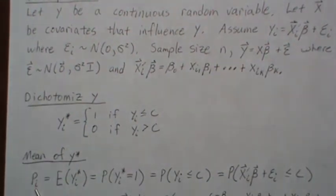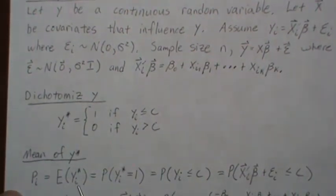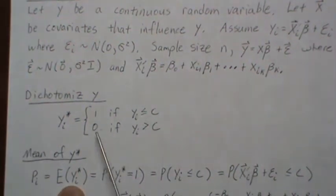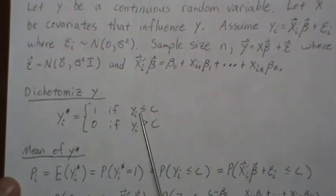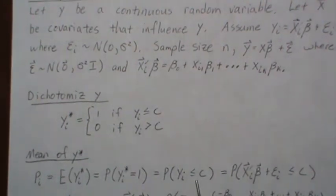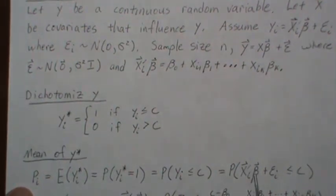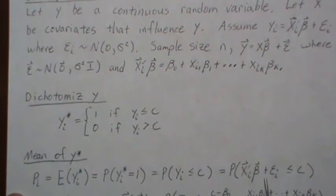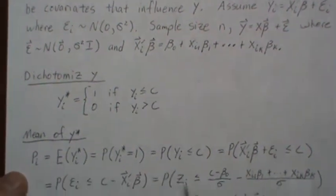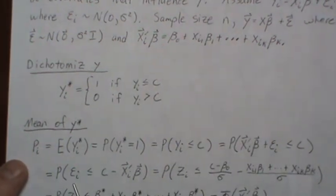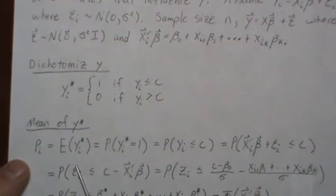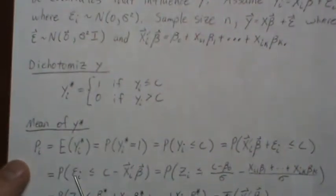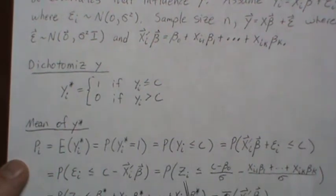Let's call it Y*. For each observation, we're going to let it be 1 if it's less than or equal to c, and 0 if it's greater than c. Let's look at the mean of Y*, call it π. The expected value of Y* is the probability of Y* equaling 1, which equals the probability that Y_i is less than or equal to c.